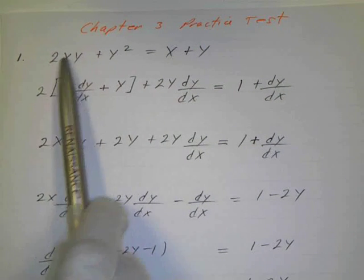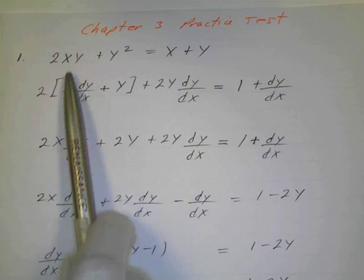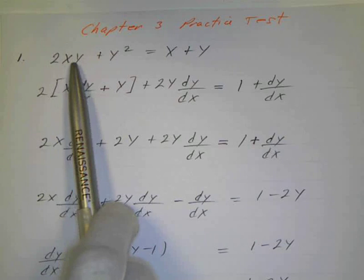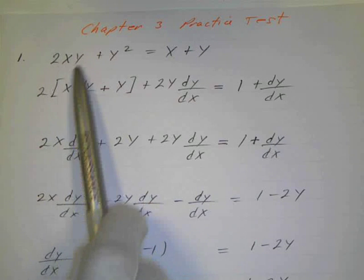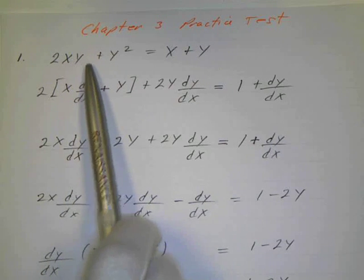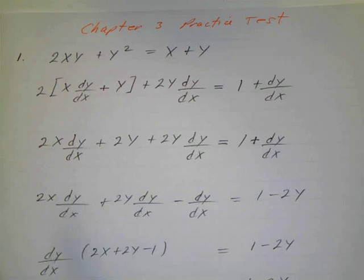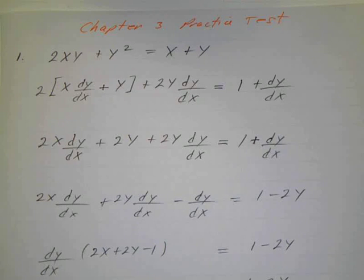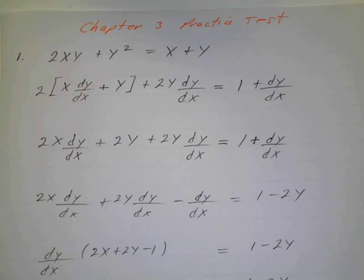We have 2 times, and we have to use the product rule here and do that implicitly. So that would be the first times the derivative of the second plus the second times the derivative of the first. The first is x times the derivative of the second, which is dy/dx.